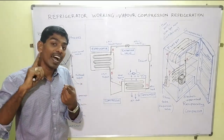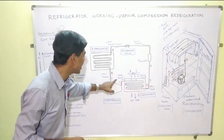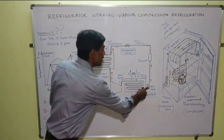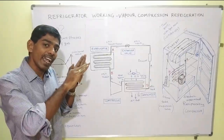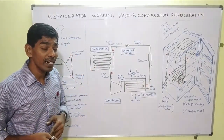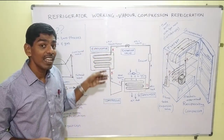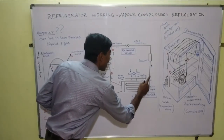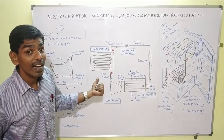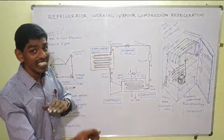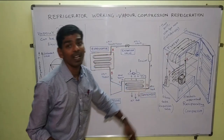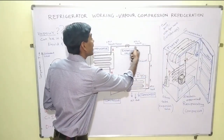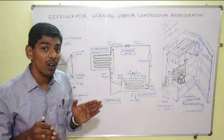In the compressor, the refrigerant is continuously compressed and becomes a high pressure, high temperature vapor. To condense this vapor, it is circulated in a condenser where atmospheric air is flowed over it to cool it. The temperature comes down and the refrigerant changes phase from vapor to liquid. So from high pressure, high temperature vapor, we now get high pressure, low temperature liquid after the condenser.